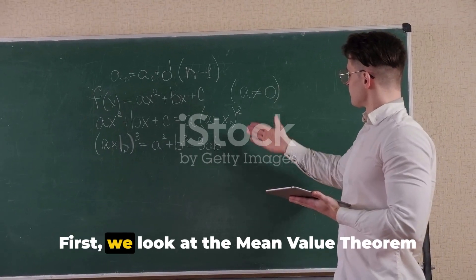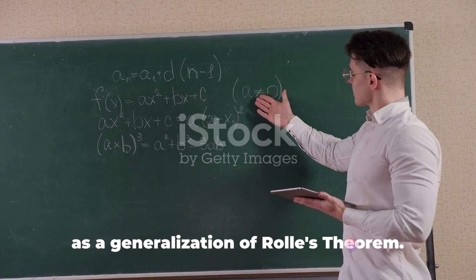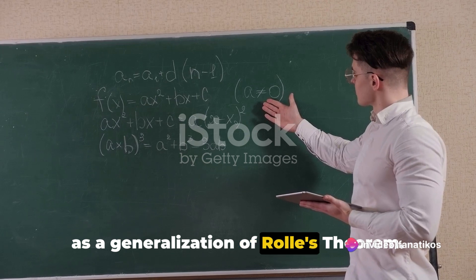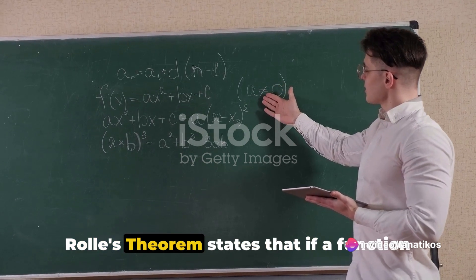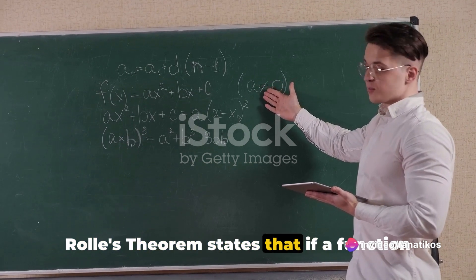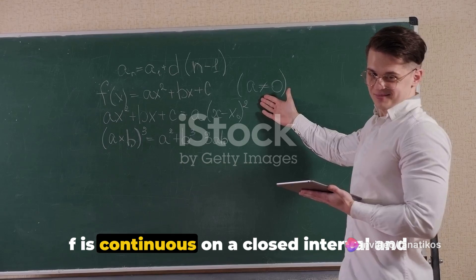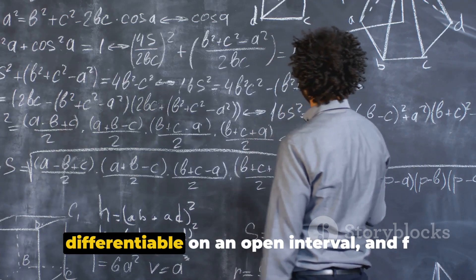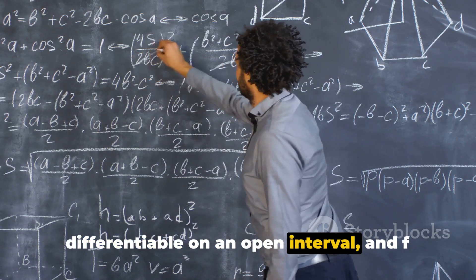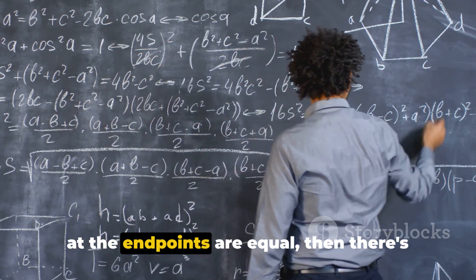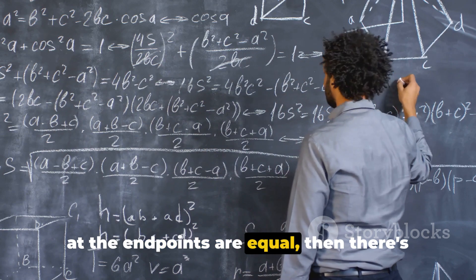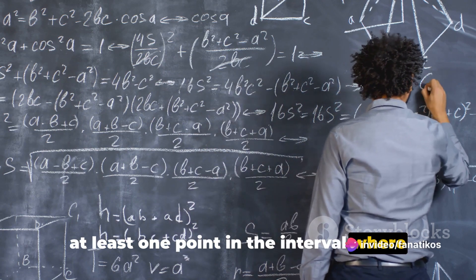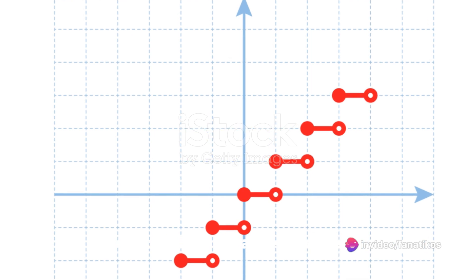First, we look at the mean value theorem as a generalization of Rolle's theorem. Rolle's theorem states that if a function f is continuous on a closed interval and differentiable on an open interval, and f at the endpoints are equal, then there's at least one point in the interval where the derivative equals zero.